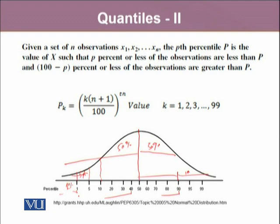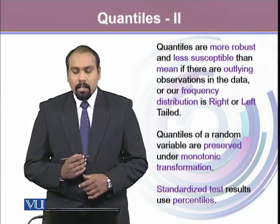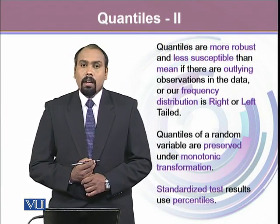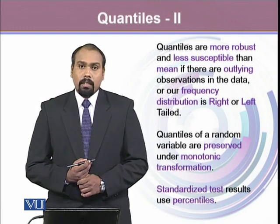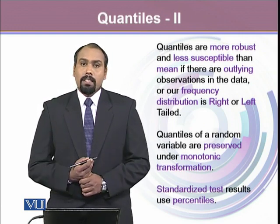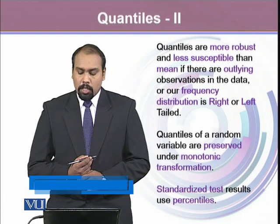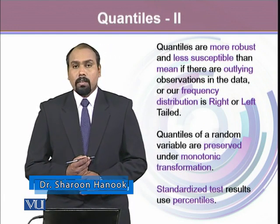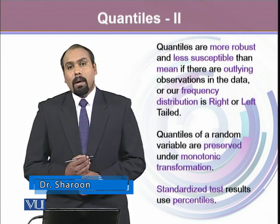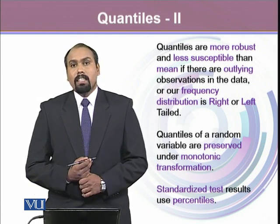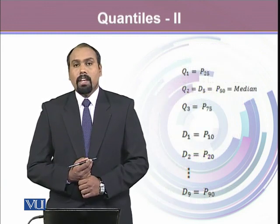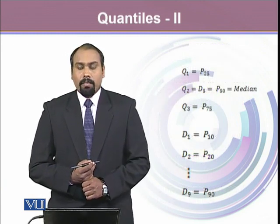Quartiles are more robust and less susceptible than mean. If there are outlying observations in our data, quartiles are less affected even if the data is right skewed or left skewed. Quantiles of a random variable are preserved under monotonic transformation. Moreover, among its applications, standardized test results use percentiles as one of the most frequent examples.